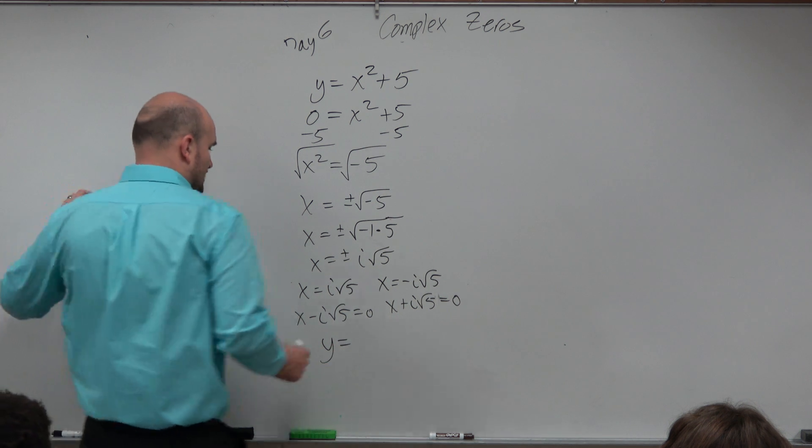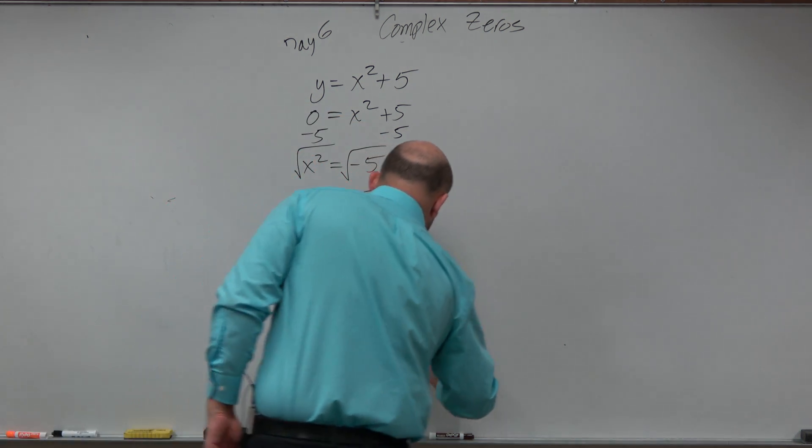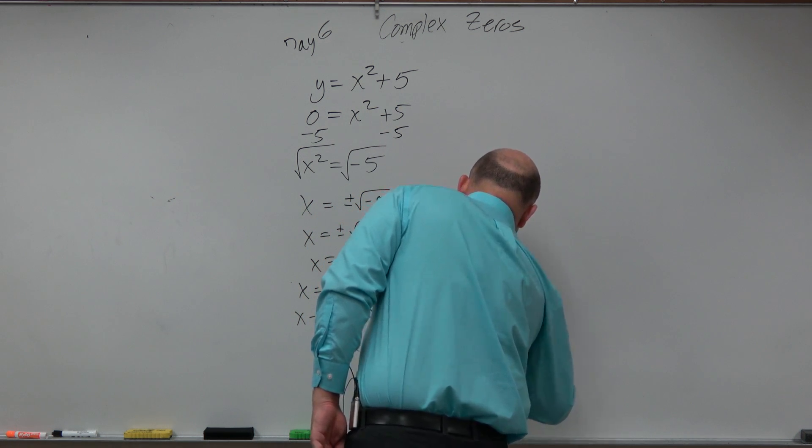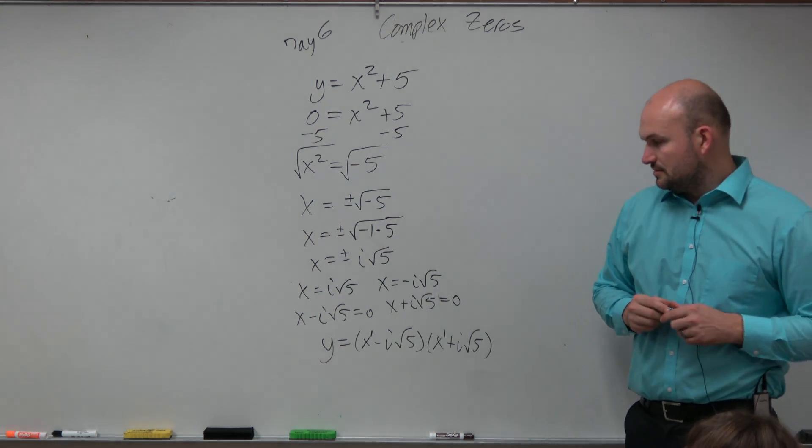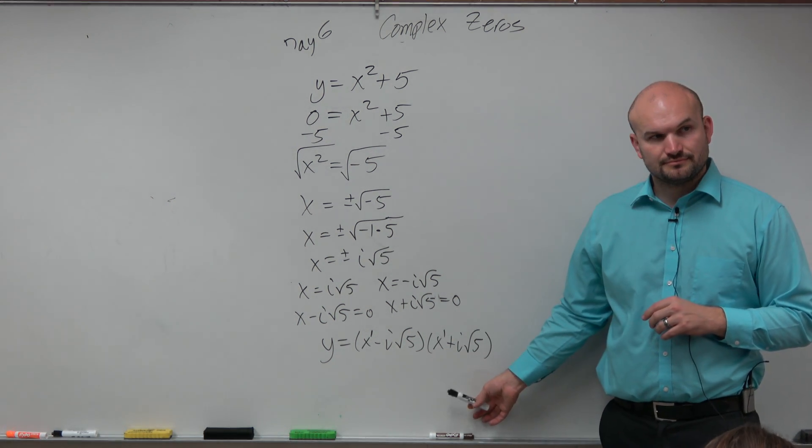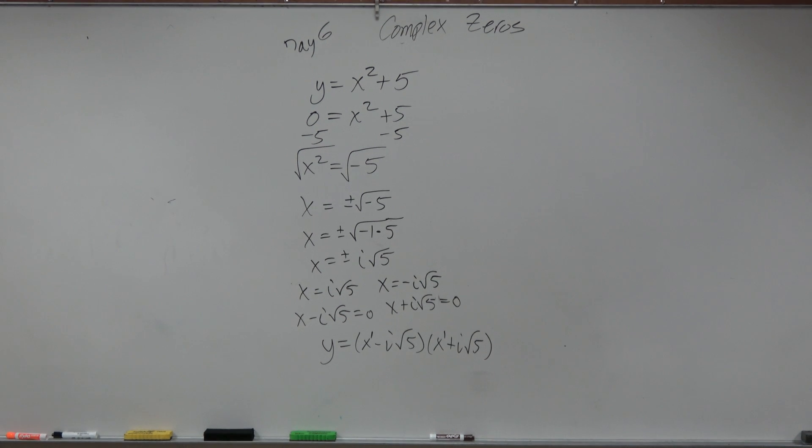Writing them as linear factorization means you're writing them as a product of linear factors. Remember from the beginning, we liked writing things as linear factorization. When you write things as linear factorization, it's really easy to find the zeros.